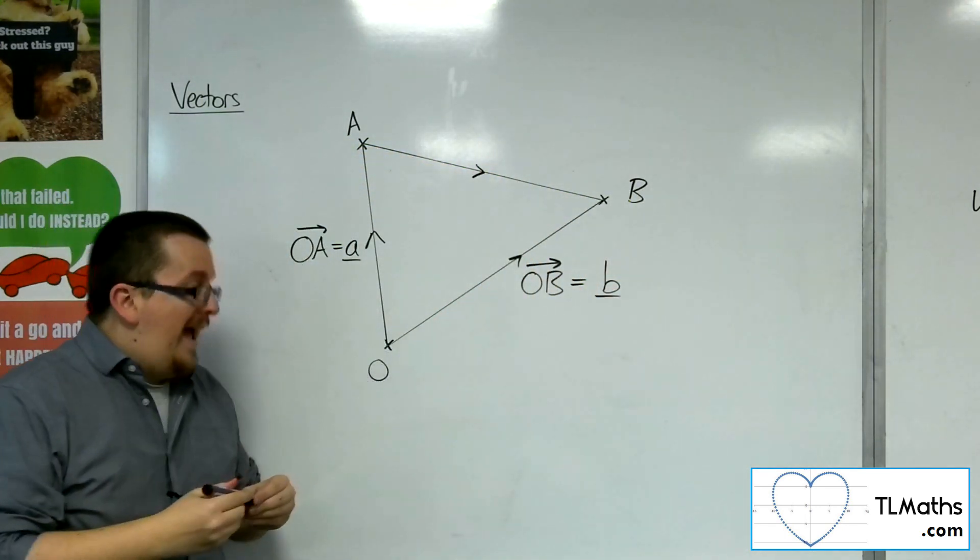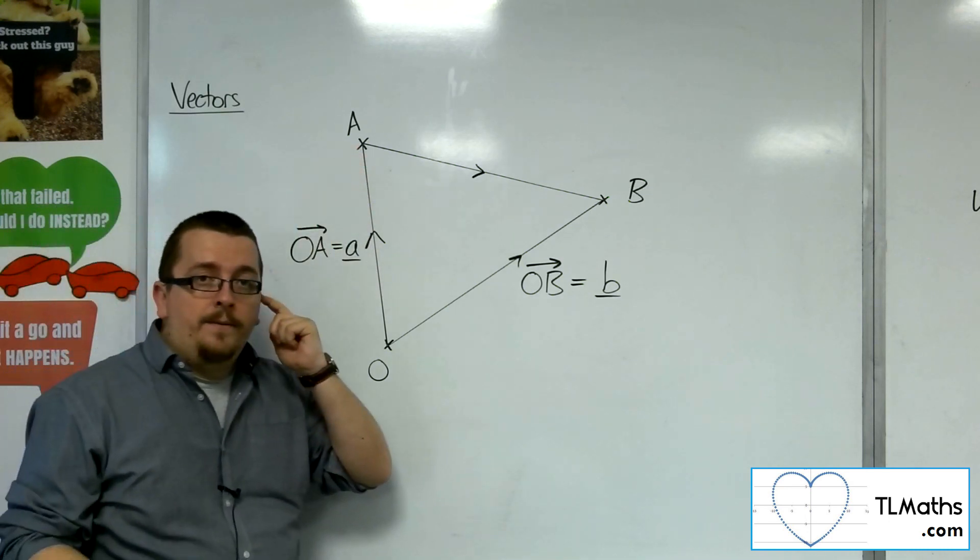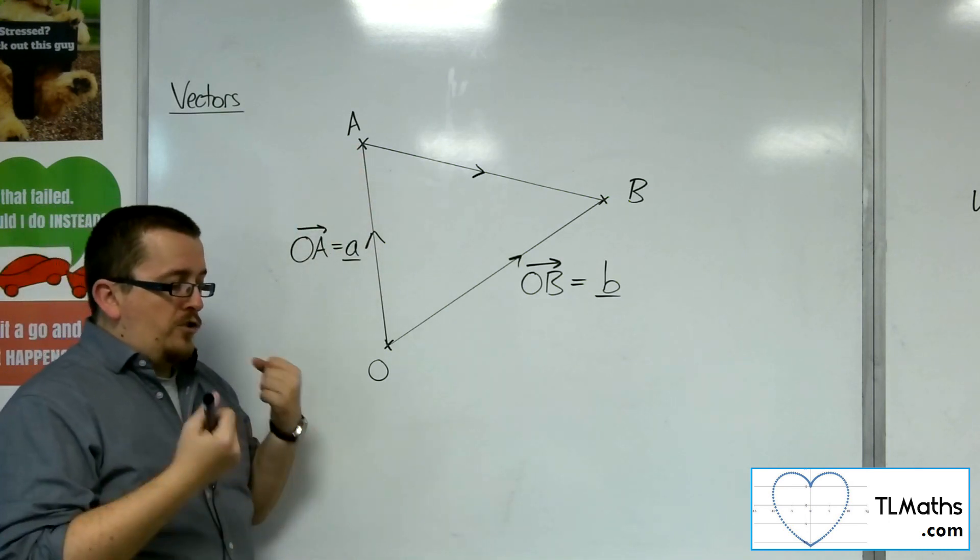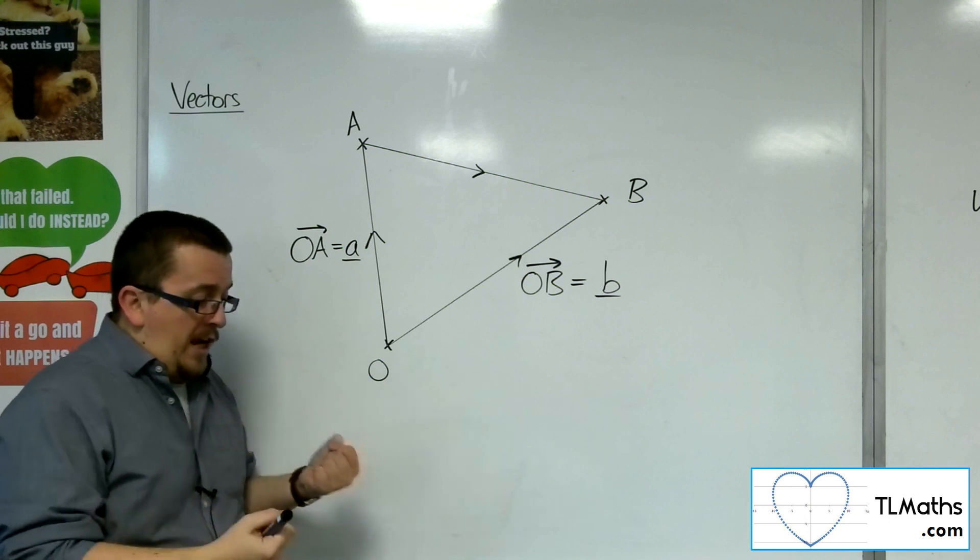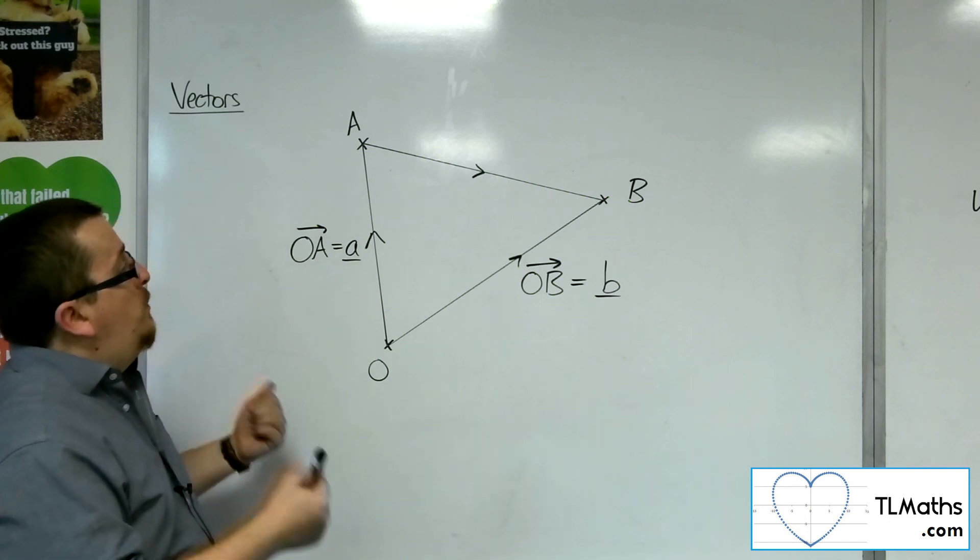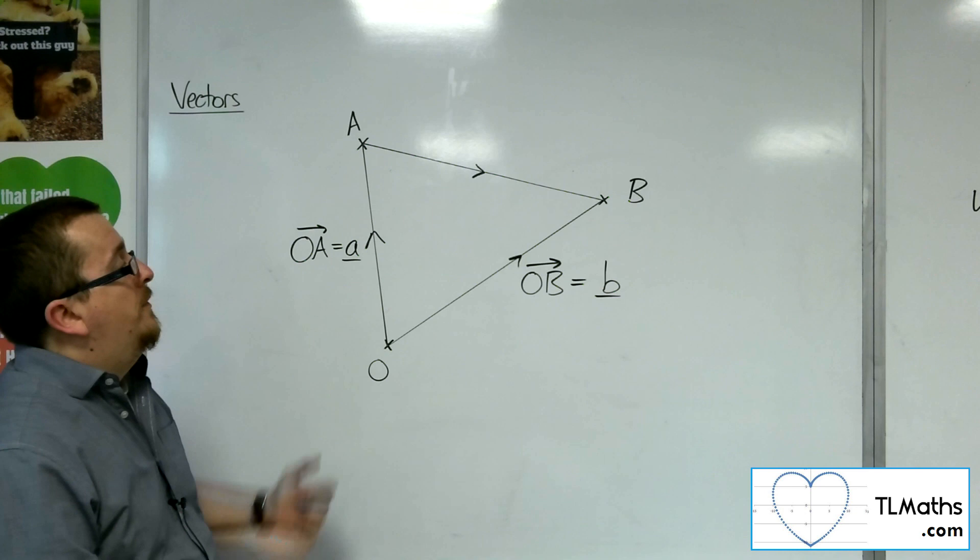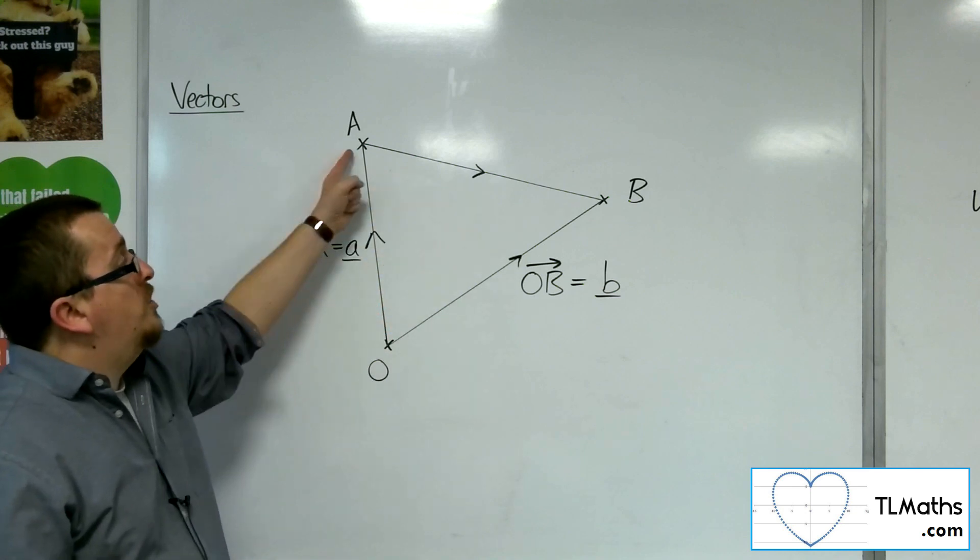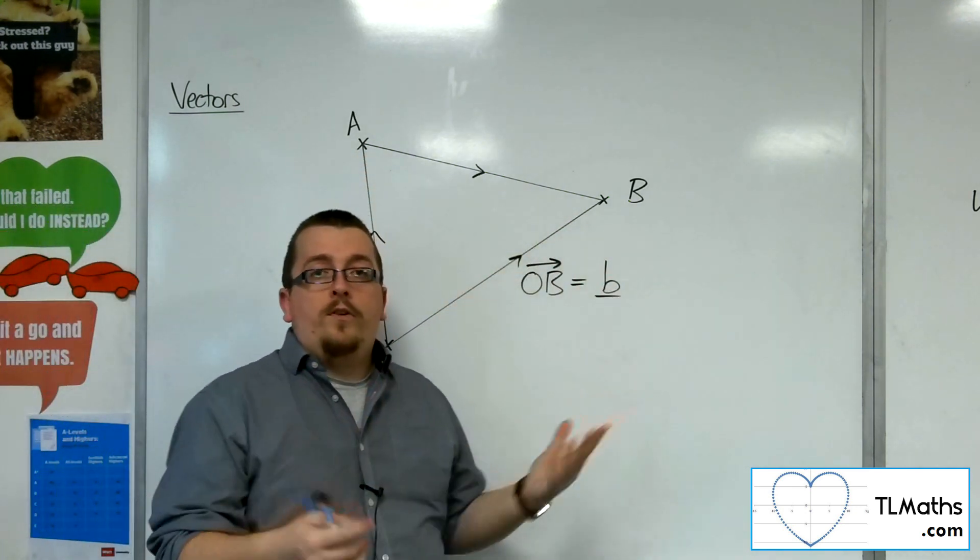So if you were at point A, and you saw someone lost, they were looking at the map and they asked you for directions, how do you get to B?